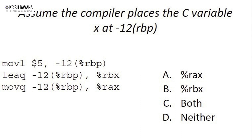Let's look at an example for pointers. Let's say we have: movl $5 to -12(%rbp), where -12(%rbp) is x. In the first command we are moving five into the destination -12(%rbp), so x equals 5. In the next line we use lea -12(%rbp) to load x's address into RBX, so RBX holds the actual address of x. Then movq -12(%rbx) to RAX moves the value five into RAX.